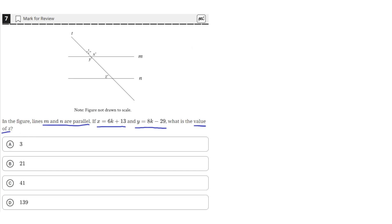So we're given the expression for X and Y. And since these are vertical angles, since they're on opposite sides of this intersection at this point, we know that the degree of X is equal to the degree of Y.